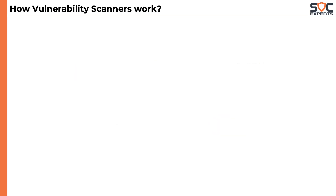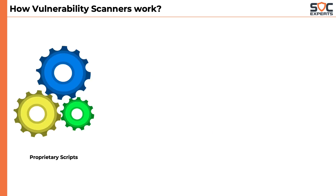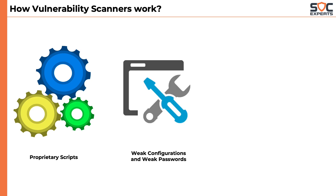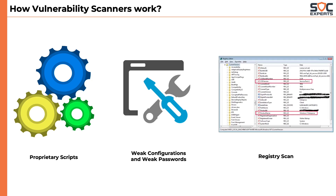How do vulnerability scanners work? Most VA scanners use scripting languages to scan machines, and the results are compared with a database of known vulnerabilities. Vulnerability scanners can also detect weak configurations and passwords by performing small-scale attacks. Some scripts in vulnerability scanners look for registry values to identify the version and patch level of an application.